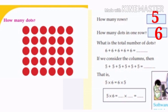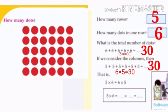Six plus six plus six plus six plus six is equal to thirty. If we consider the columns, then five plus five plus five plus five plus five plus five is equal to thirty. That is, six times five is equal to thirty. So, five into six is equal to six into five is equal to thirty. When two numbers are multiplied, the answer is the same.